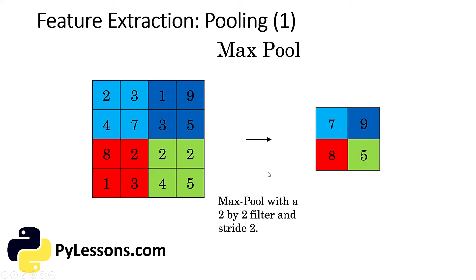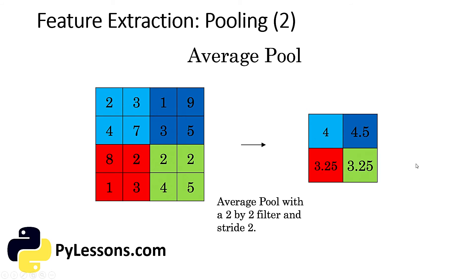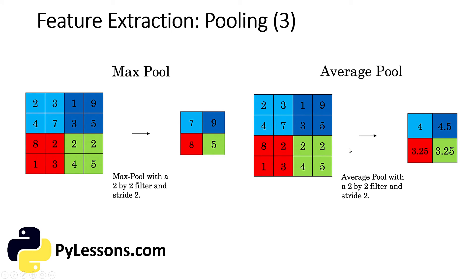Average pooling returns the average of all the values from the portion of the image covered by the kernel, so it simply performs dimensionality reduction as a noise suppression mechanism. We can say that max pooling performs a lot better than average pooling, at least in practice. The convolutional layer and the pooling layer together form the i-th layer of a convolutional neural network. Depending on the complexities in the image, the number of such layers might be increased for capturing low-level details even further, but at the cost of more computational power.